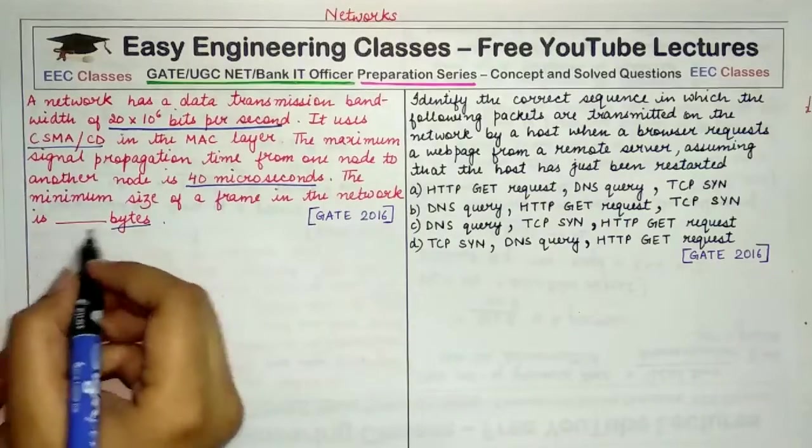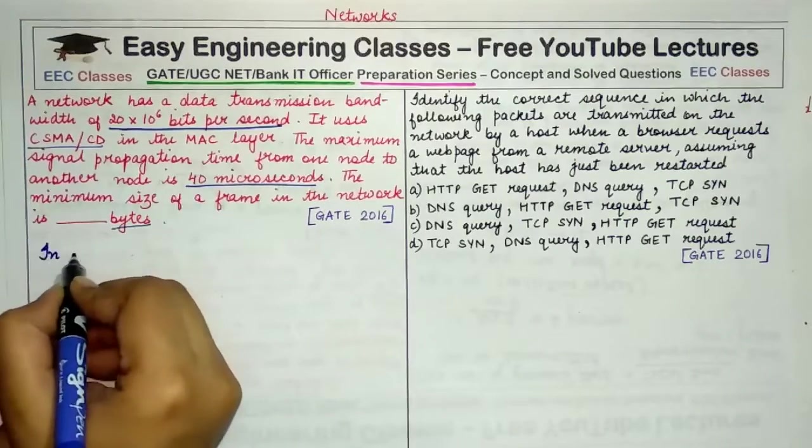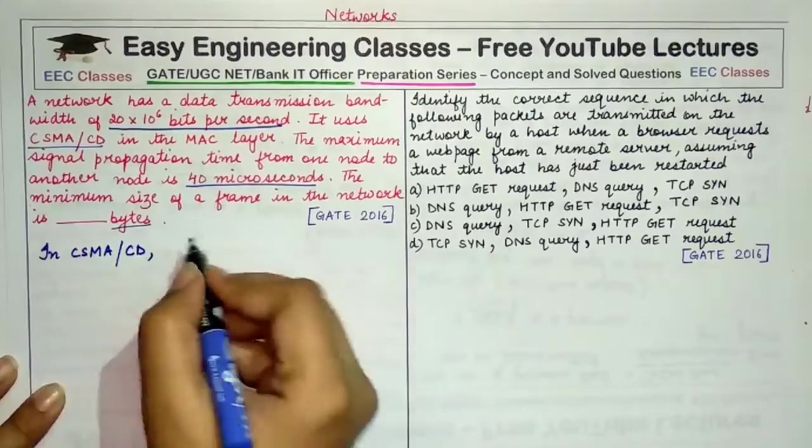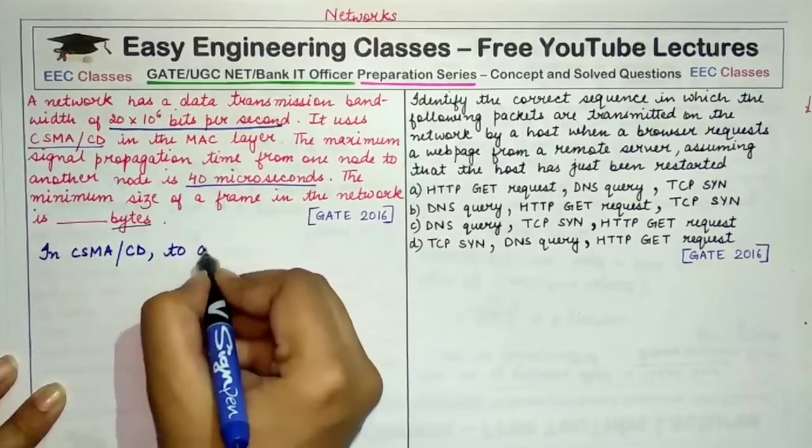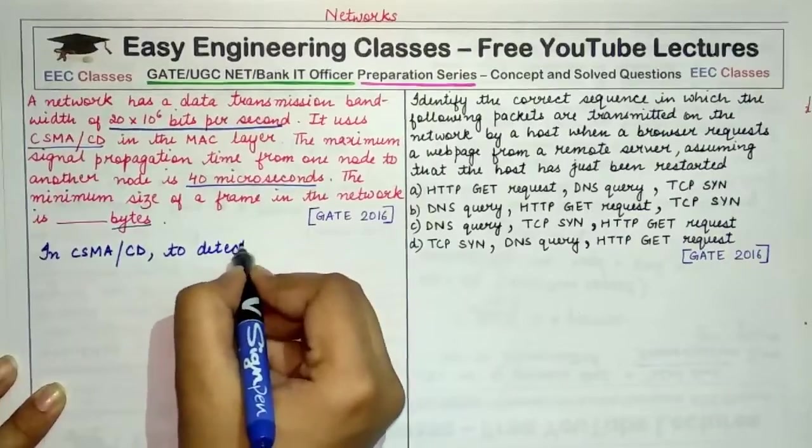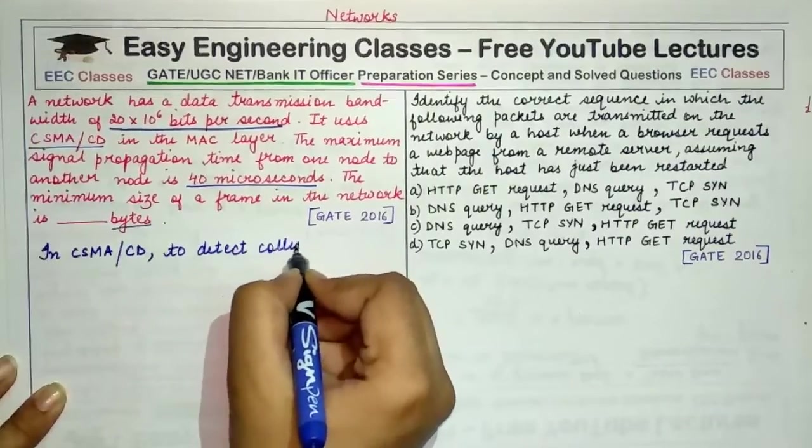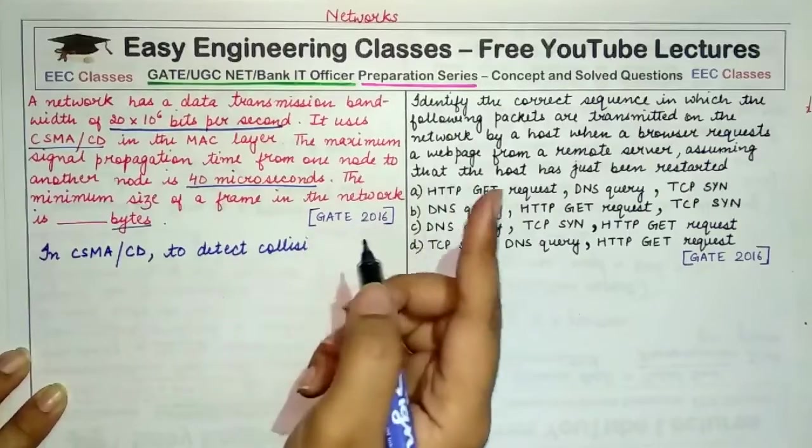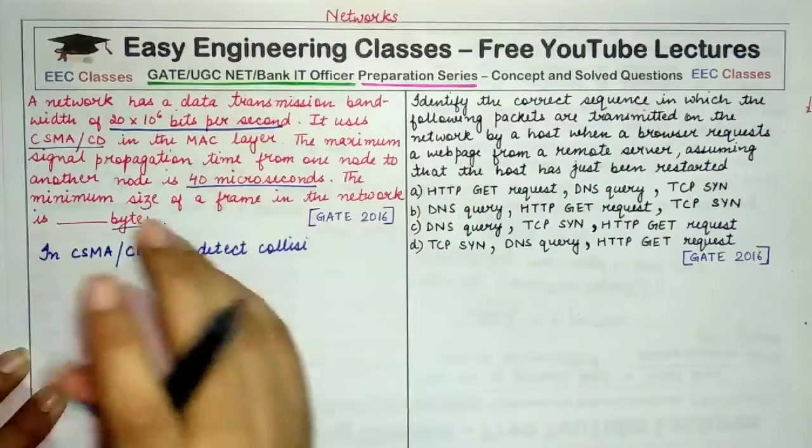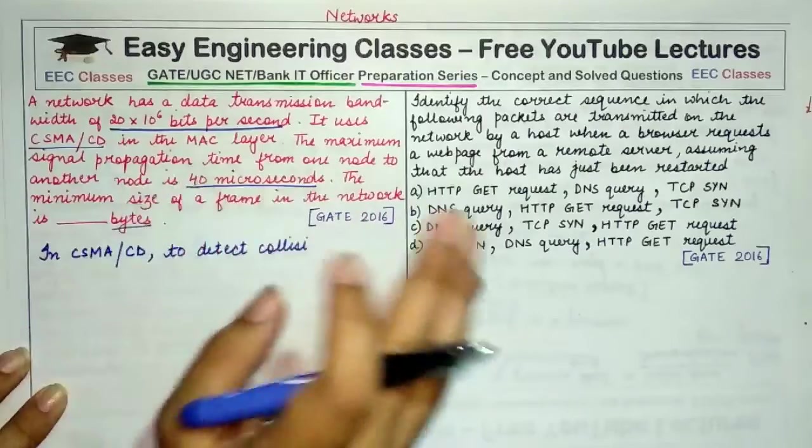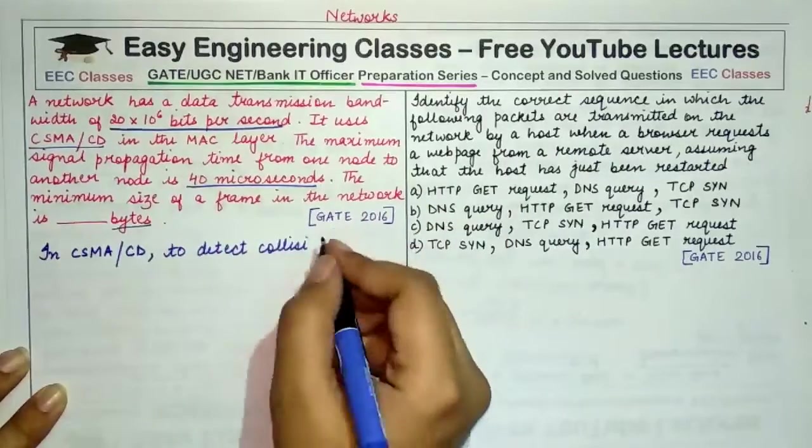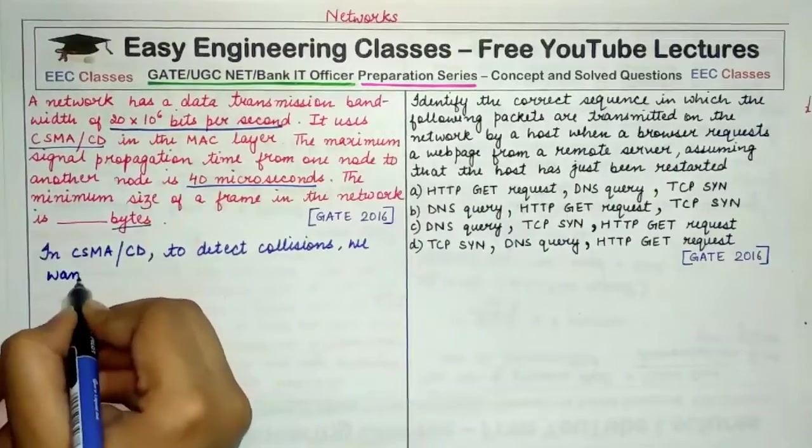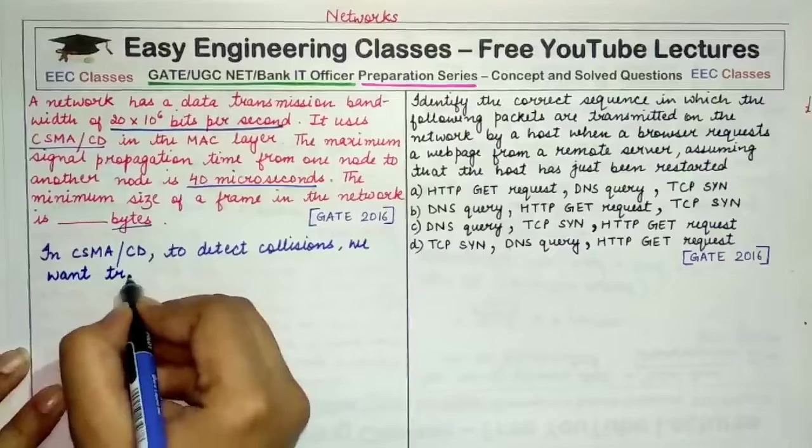I would write it here. In CSMA/CD, to detect collisions, collisions would be detected if the sender is still listening to the channel as long as it is transmitting and as long as there is no collision in the entire round trip duration.